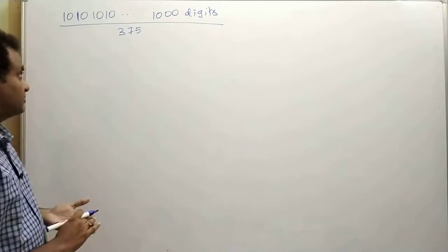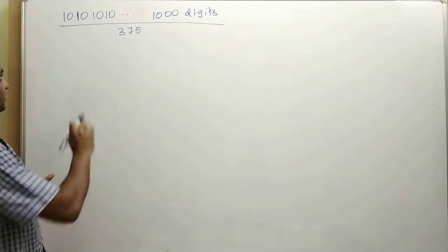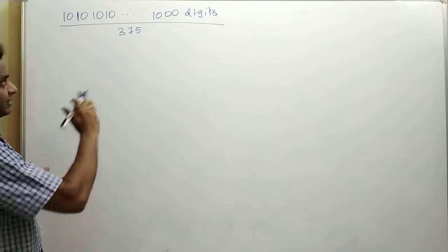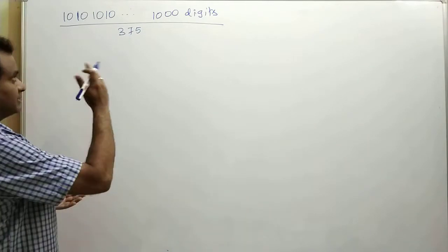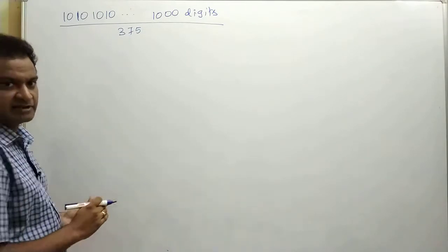Hi, in this question we have to find the remainder when 101010 till 1000 digits, that expression, has to be divisible by 375.